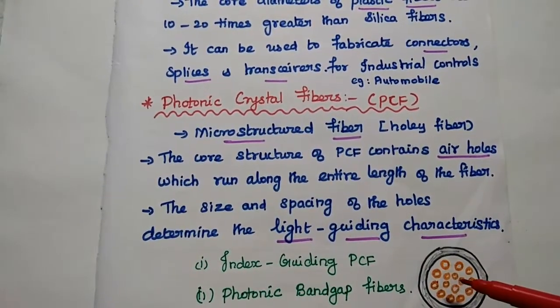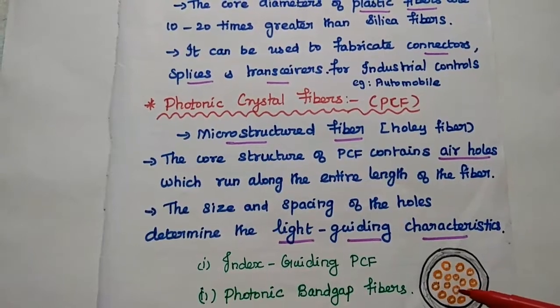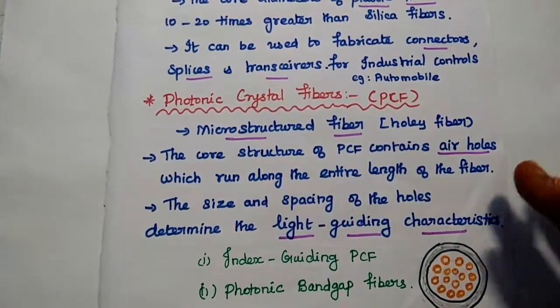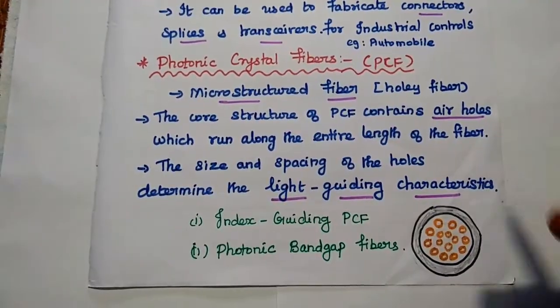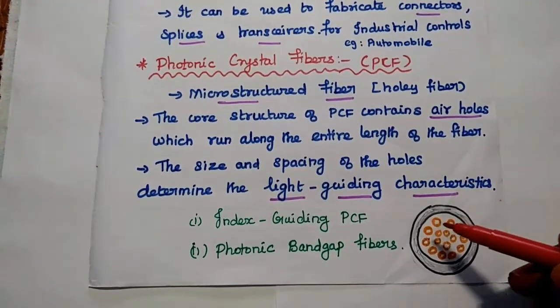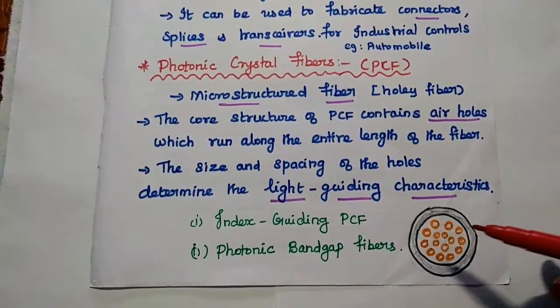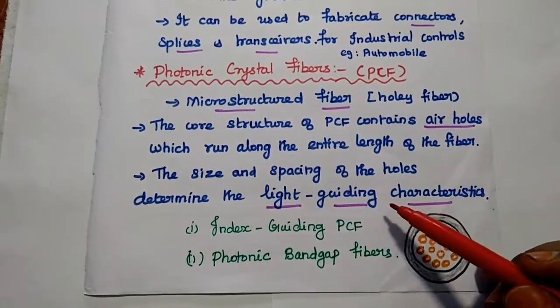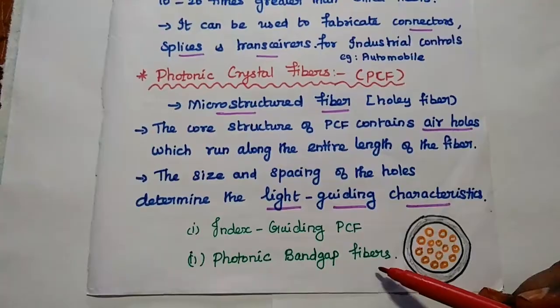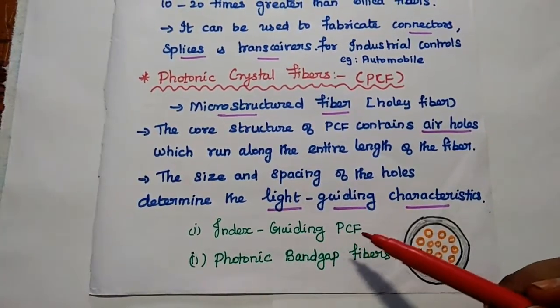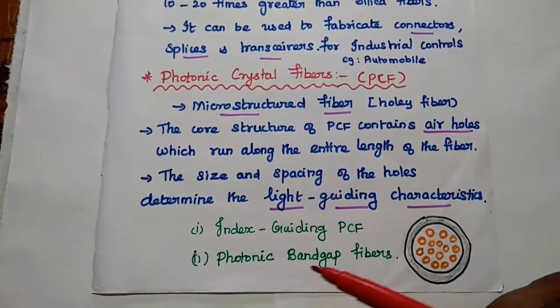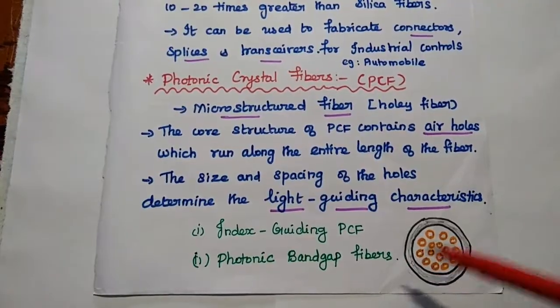Here the size and spacing of the holes determine the light guiding characteristics. So it is very important concept over here. The air holes in the fiber cable decides the light guiding characteristics. So there are two types of structures used here. One is index guiding PCF. Another one is photonic band gap fibers.